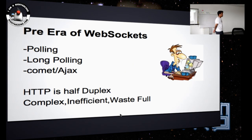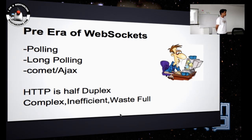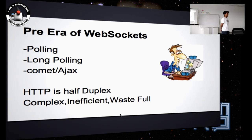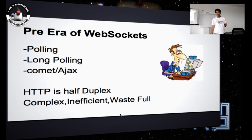Before WebSockets, things were pretty messy. Polling and long polling were the methodologies mostly used. In polling, the client sends a request and gets a response, but is programmed to send a request again after a fixed period of time, meaning the client has to know when data is available on the server. For live stock market information that updates dynamically, that was not possible — you don't know when there would be an update. That was a major flaw with polling.